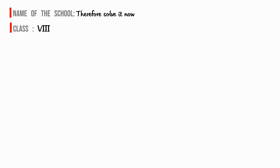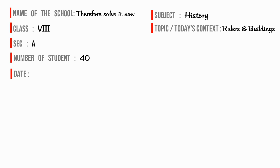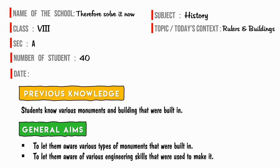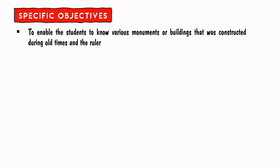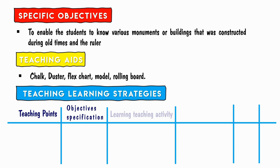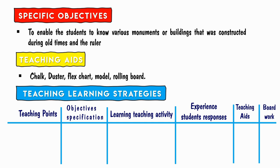I am now going to discuss a sample lesson plan based on the Herbertian approach. We begin by writing the name of the school, then class, section, number of students, subject (History), and today's topic: Rulers and Buildings. Previous knowledge: students know various monuments and buildings that were built in ancient times. General aim and specific objectives are noted. Teaching aids include chalk, duster, flex chart, model, rolling board, etc. Teaching-learning strategies include columns for teaching points, objectives, learning-teaching activity, expected student response, teaching aids, and blackboard work.